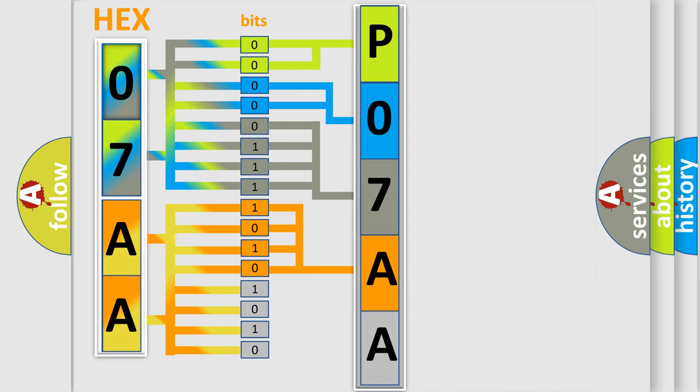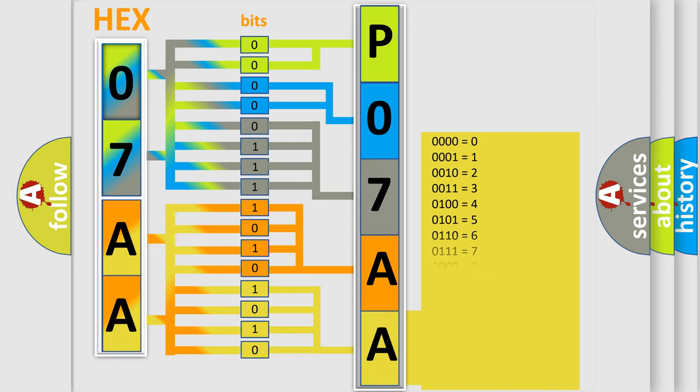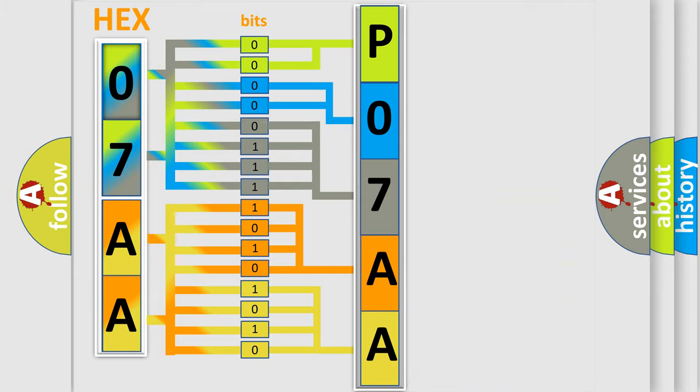A single byte conceals 256 possible combinations. We now know in what way the diagnostic tool translates the received information into a more comprehensible format.